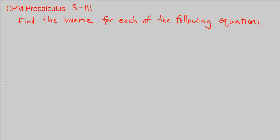This is CPM Pre-Calculus Chapter 3, Number 111. Find the inverse for each of the following equations. So let's look at A. A is f of x is the cube root of 3x minus 5.